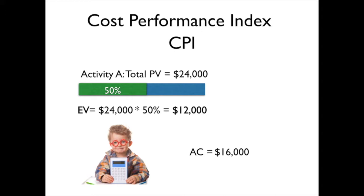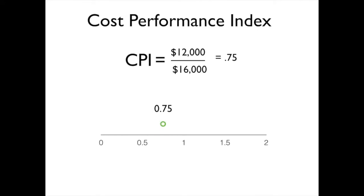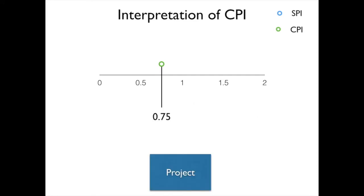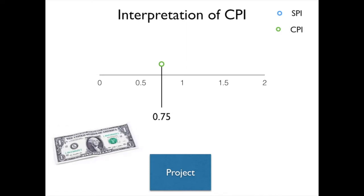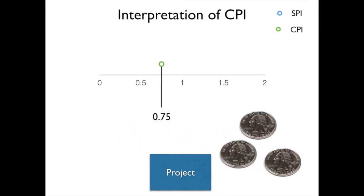To calculate the CPI, we're going to take the earned value and divide it by the actual costs. In this case, we're going to get a CPI of 0.75. When we look at where that sits on our scale, we see that 0.75 indicates that we are over cost or over budget. Another way to look at this is: for every dollar that we put into our project, we are only getting $0.75 back out of it.